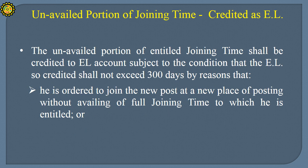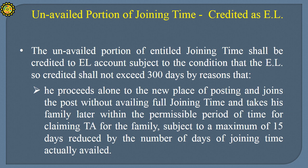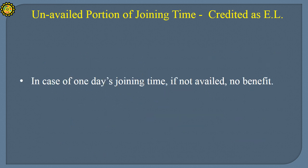Unavailed Joining Time Credited as EL: The unavailed portion of entitled joining time shall be credited to the EL account, subject to the condition that EL so credited shall not exceed 300 days, where the government servant is ordered to join a new post without availing full joining time, or where he proceeds alone to the new place and joins without availing full joining time and takes his family later within the permissible period. This is subject to a maximum of 15 days reduced by the number of days of joining time actually availed. In case of one day joining time, if not availed, there will be no benefit of EL.